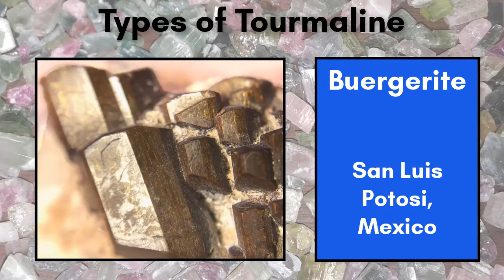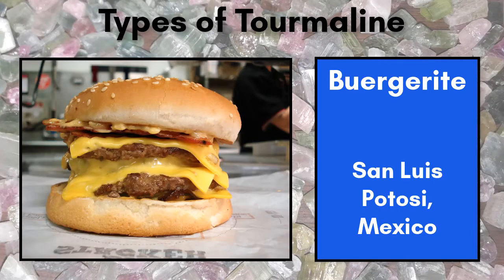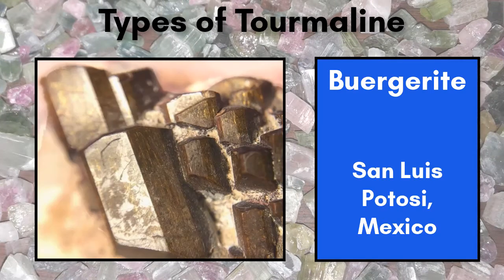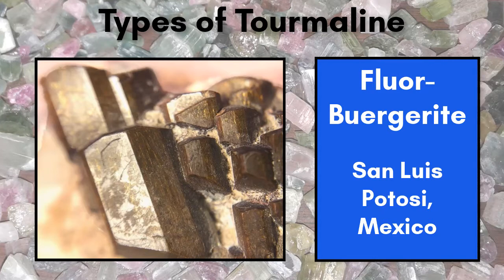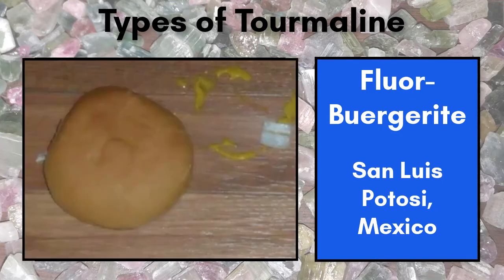Buergerite — yeah, that's definitely it. Buergerite is a rare bronze-to-dark-brown tourmaline that forms in rhyolite deposits. In 2011, it was renamed fluor-buergerite because of the presence of fluorine in the chemical analyses of the mineral.